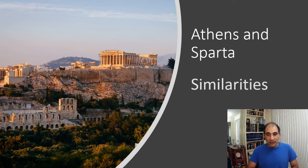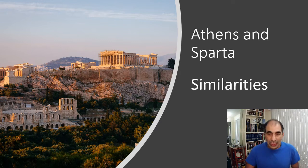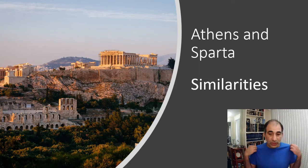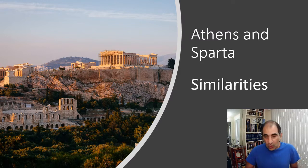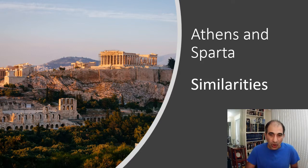Welcome back. We're going to get into our next topic here, still on the Greek world. Last time we talked about geography and how geography was really important for the ancient Greeks, and how as a result of their geography you get this city-state idea — the polis — and how you have many city-states. You're going to want to know the similarities and differences, especially with Athens and Sparta. Those are the two big ones.